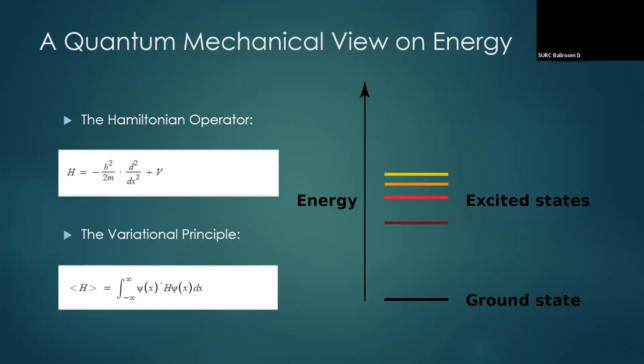By versatile results, I mean: given two wave functions on which we perform the variational principle and get two different answers — one of higher magnitude and one of lower magnitude — the result of lower magnitude is said to be the most versatile. Because we are setting an upper bound on the expectation value of energy, a lower value means we are more tightly constraining the energy values that the wave function can take on, making it more accurate.